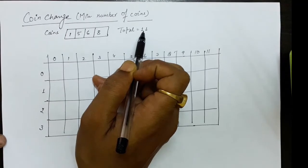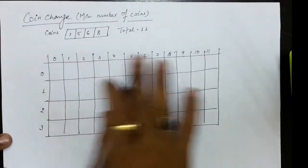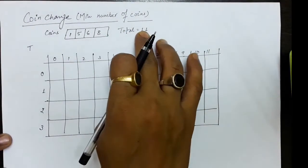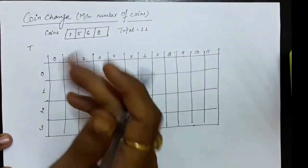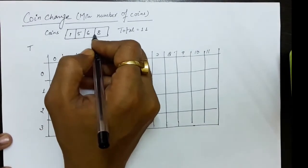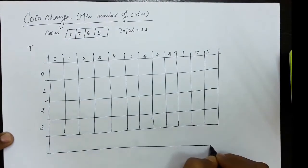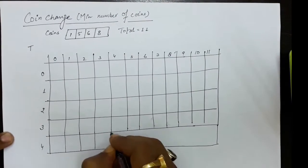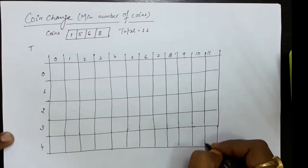We will be finding a dynamic programming solution to this, and this will be a 2D dynamic programming problem because we will be using a 2D memoization table. For finding the solution, let us consider a memoization table T. The size of this table will be: on the column side up to 11, and on the row side the coins. Since we have 4 coins the number of rows will be 5, because we take an additional row and column as reference.